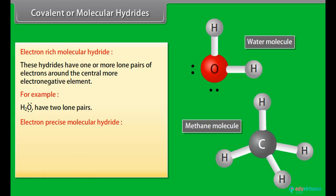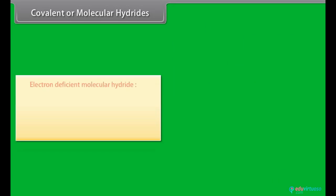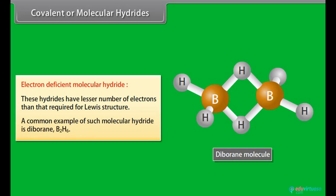Electron-precise molecular hydride: These hydrides have required number of electrons for Lewis structure. A common example of electron-precise molecular hydride is Methane. Electron-deficient molecular hydride: These hydrides have lesser number of electrons than that required for Lewis structure. A common example of such molecular hydride is Diborane.